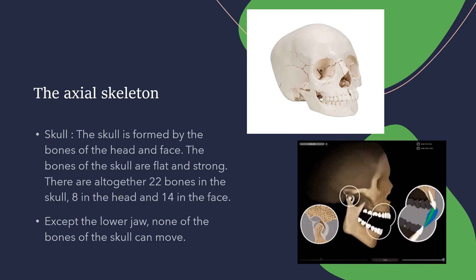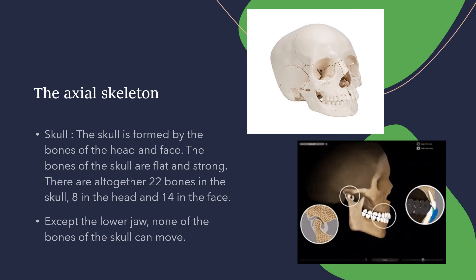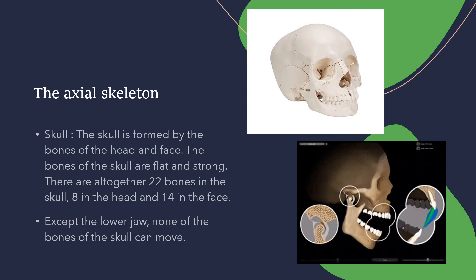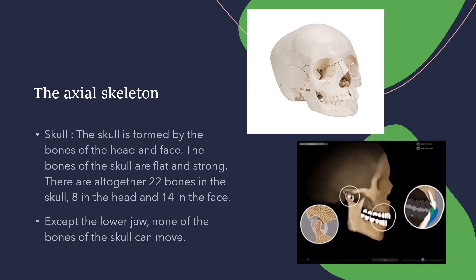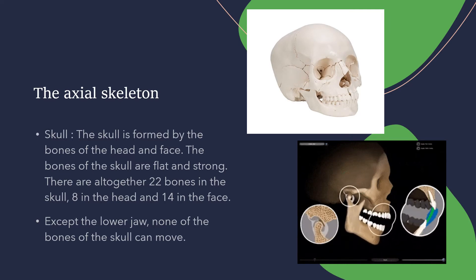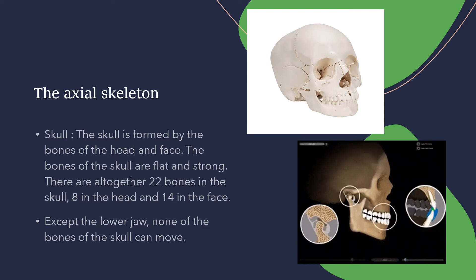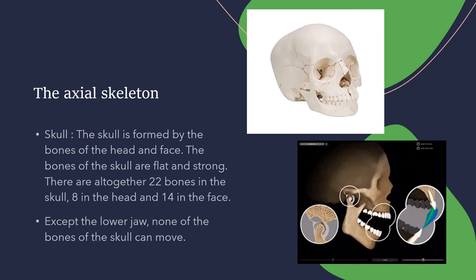Except for the lower jaw, none of the bones of the skull can move. The lower jaw is the only movable bone in the skull. All the other 21 bones of the skull are immovable — they are fixed, immovable bones. Only the lower jaw has movement.